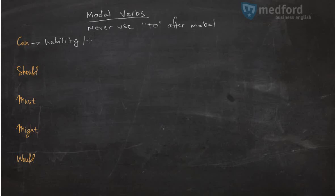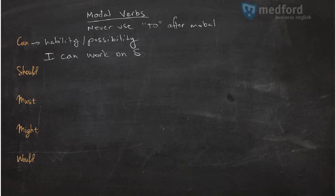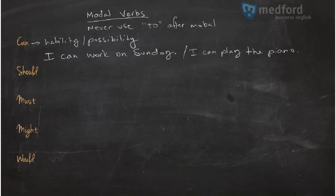Can indicates that you have the ability or the possibility. So if you say, for example, 'I can work on Sunday,' you're saying to your boss that it is possible. Or if you say 'I can play the piano,' you're saying that you have the ability.